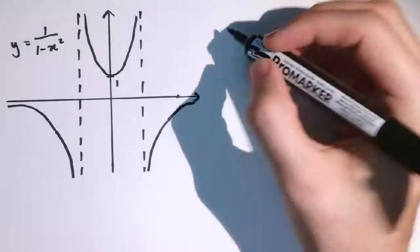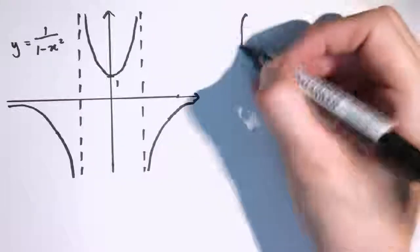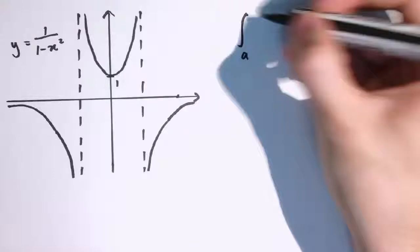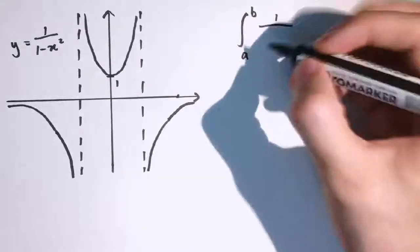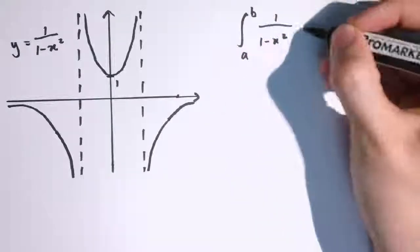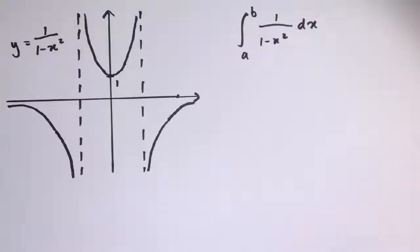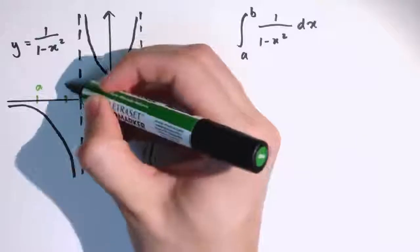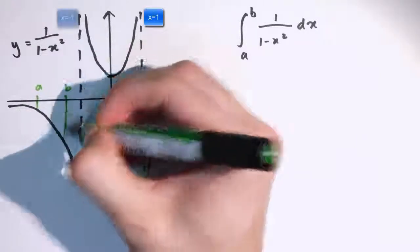Think about these sort of integrals a little bit more carefully. If you think this is the graph of y equals 1 over 1 minus x squared, and if we want to integrate 1 over 1 minus x squared dx between a and b, we've got to be in one of three regions. A and b can't cross one of the asymptotes, which are at plus 1 and minus 1.